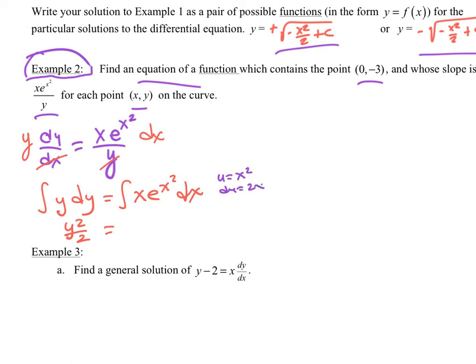But I know that I need u = x², du = 2x dx. So I need a 2, so I need a 1/2. So this is 1/2 e^u. So that would be e^(x²). And then plus c.